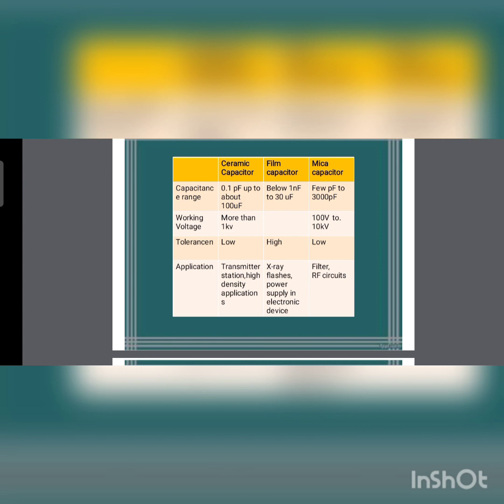The capacitance range for ceramic capacitors is 0.1pF up to about 100µF; for film capacitors it is below 1nF to 30µF; and for mica capacitors it is a few picofarads to 3000pF. Film capacitors have higher tolerance than ceramic and mica capacitors. For applications, ceramic capacitors are used in transmitter stations and high-density applications; mica capacitors are used in X-ray flashes, power supplies in electronic devices, and also in filter and RF circuits.